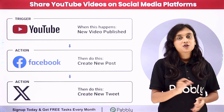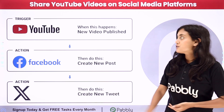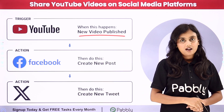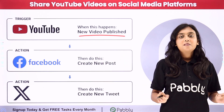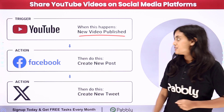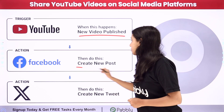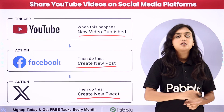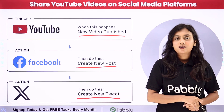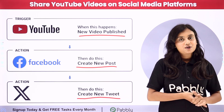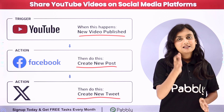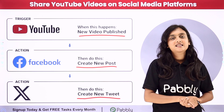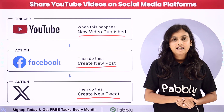So here in this automation, what is going to happen is that as soon as I am going to publish any new video on my YouTube channel, automatically that video is going to be shared as a post on my Facebook page as well as a tweet on my X, that is formerly Twitter, account. For that, we are going to create an automation between all of these applications with the help of Pably Connect.